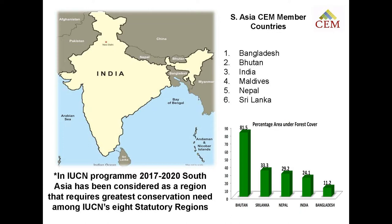This area also has high socio-cultural diversity because of the largest indigenous people population residing in many parts of South Asia. Some of the most indigenously managed landscapes and seascapes are also part of this region. However, the matter of concern is that this area also has the globally poorest of poor population, and poverty eradication has actually resulted in a lot of biodiversity loss. Deforestation and unsustainable agriculture are major areas of land degradation, and new industries like mining, thermal power, and hydropower projects have had a strong ecological footprint on the landscape.